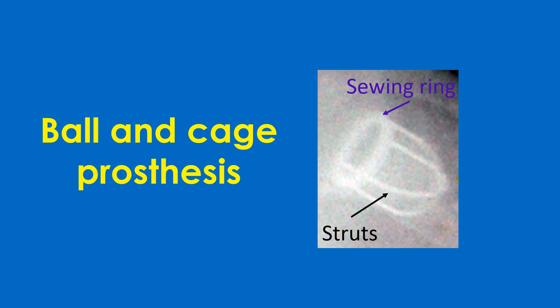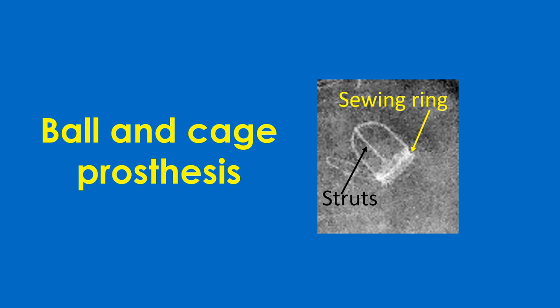This image shows a Starr-Edwards prosthetic mitral valve. The valve ring and 4 struts are visible, but the elastic poppet, being non-radiopaque, is not visible. The cage is directed downwards and to the left into the left ventricle for a mitral prosthetic valve. For the aortic Starr-Edwards valve, there are only 3 struts, and the cage is directed upwards and to the right into the aorta.